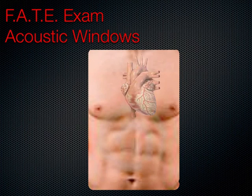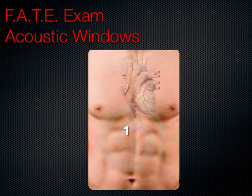The FATE exam has several key acoustic windows that we will go over today. This is a how-to discussion about how to obtain the images and what we are looking at on the screen. The first place we will evaluate the heart is subcostally — some people call this subxiphoid. In general, we are to the right of midline, looking underneath the rib through the liver into the heart, so many people call it the subcostal view. We also have an apical view, a parasternal view, and we look at the pleura bilaterally.